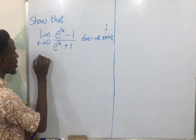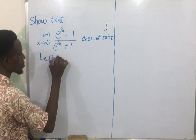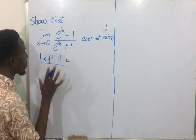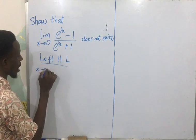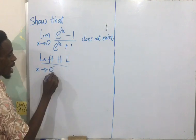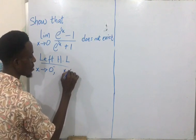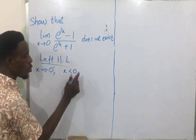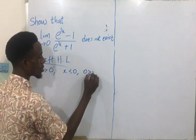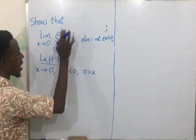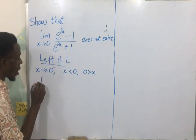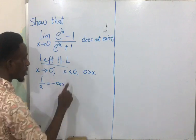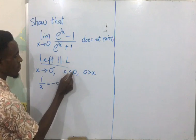I'm going to start with my left-hand limit. For the left-hand limit, x approaches 0 from the negative side, which means x is less than 0.